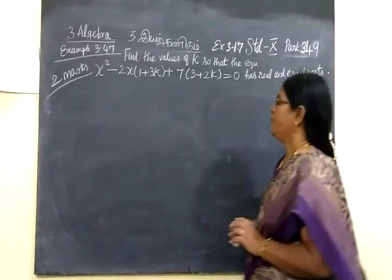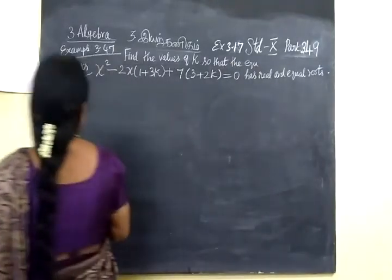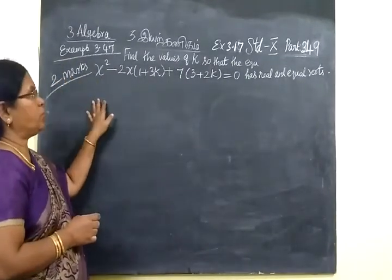Now, we want to see for 349, it has 3.47, this will come at the 2 mark.